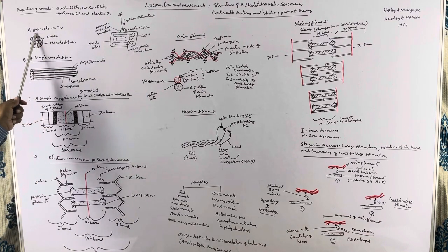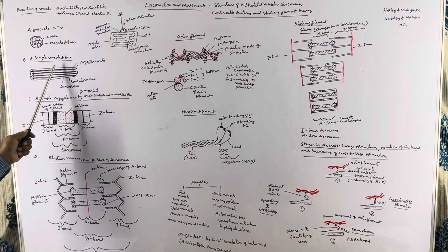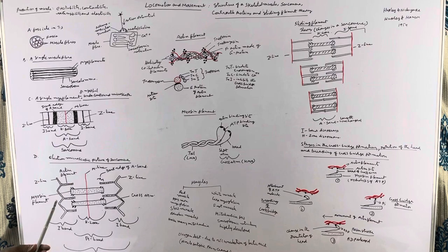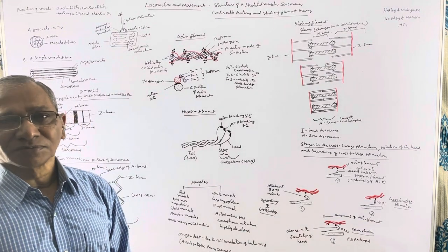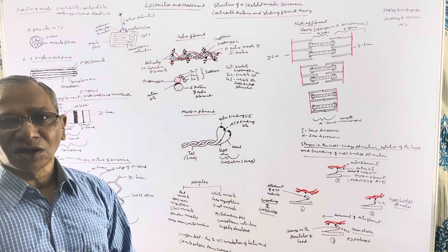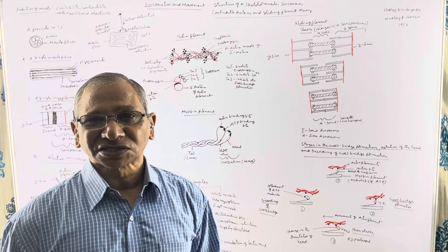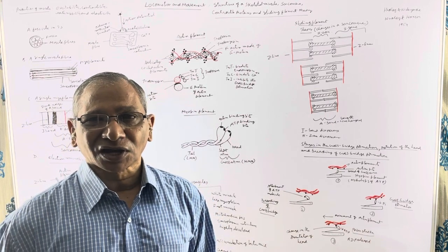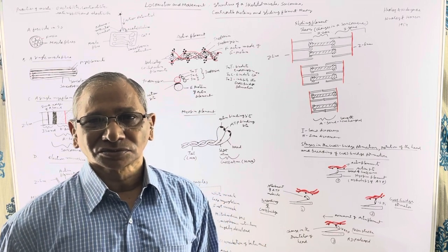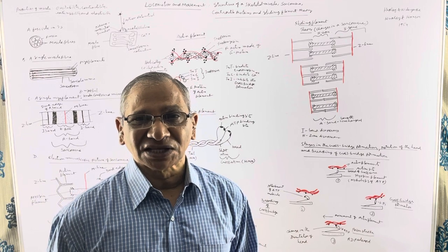This is the fascicle in cross-section, showing the muscle fibers. If you take one muscle fiber, the muscle fibers are very long and they are multi-nucleated — they possess hundreds of nuclei. So the muscle fibers are in the form of a syncytium; they are actually formed by the fusion of a number of muscle cells.